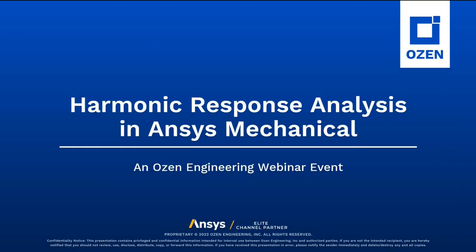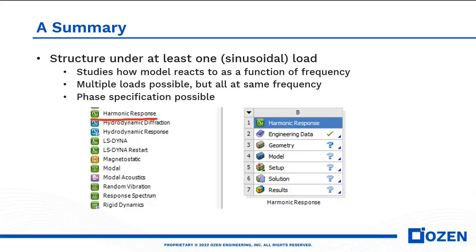Harmonic response analysis is available in ANSYS Workbench, as all the major analysis types are. You simply have to drag and drop harmonic response into the project schematic. For harmonic response, this analysis method — you basically get the gist of it by thinking about shaking a structure and evaluating its response, and the input shaking you put in is sinusoidal.